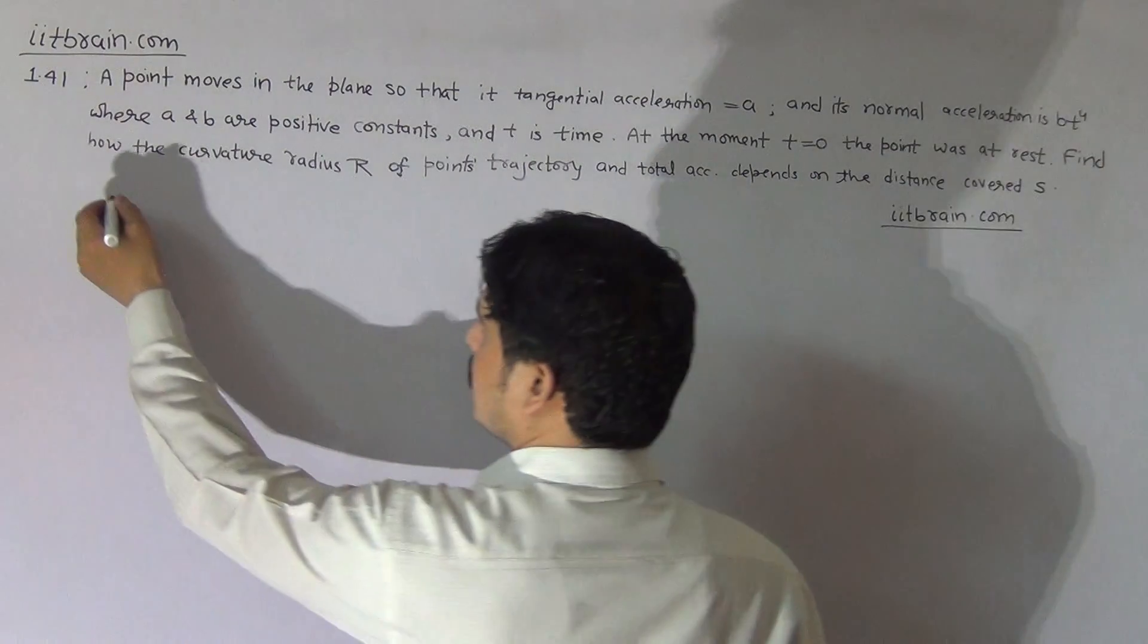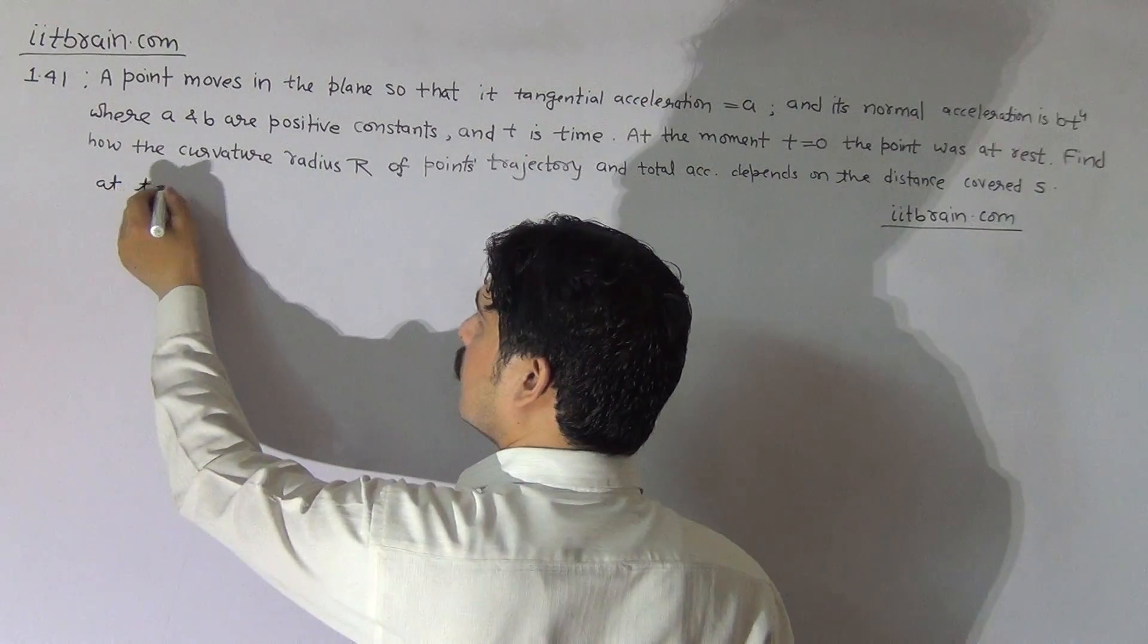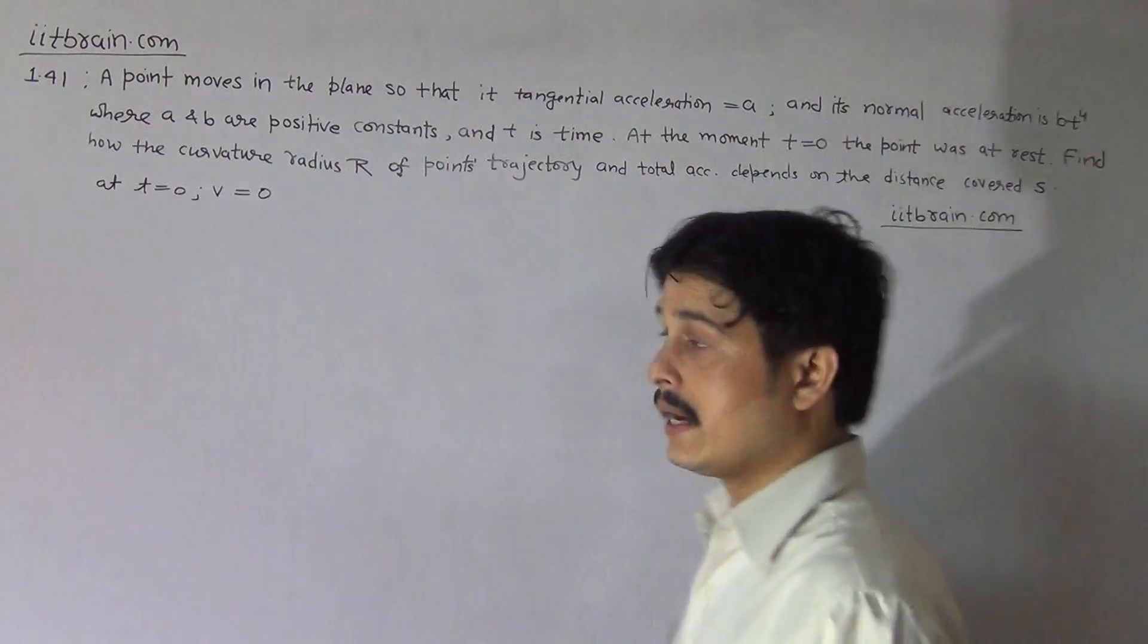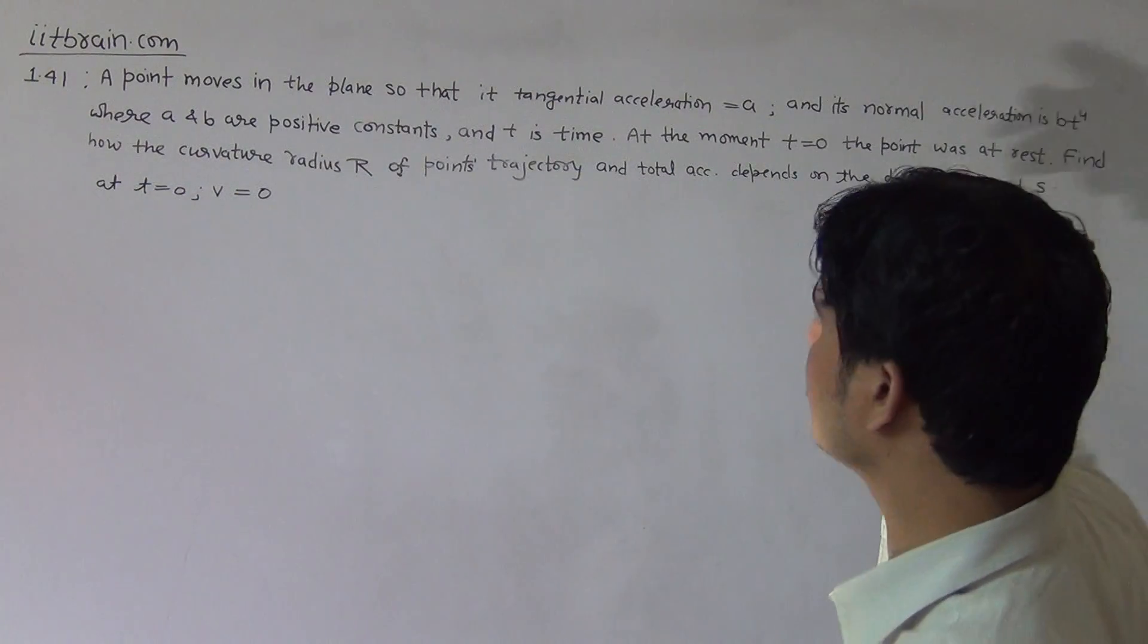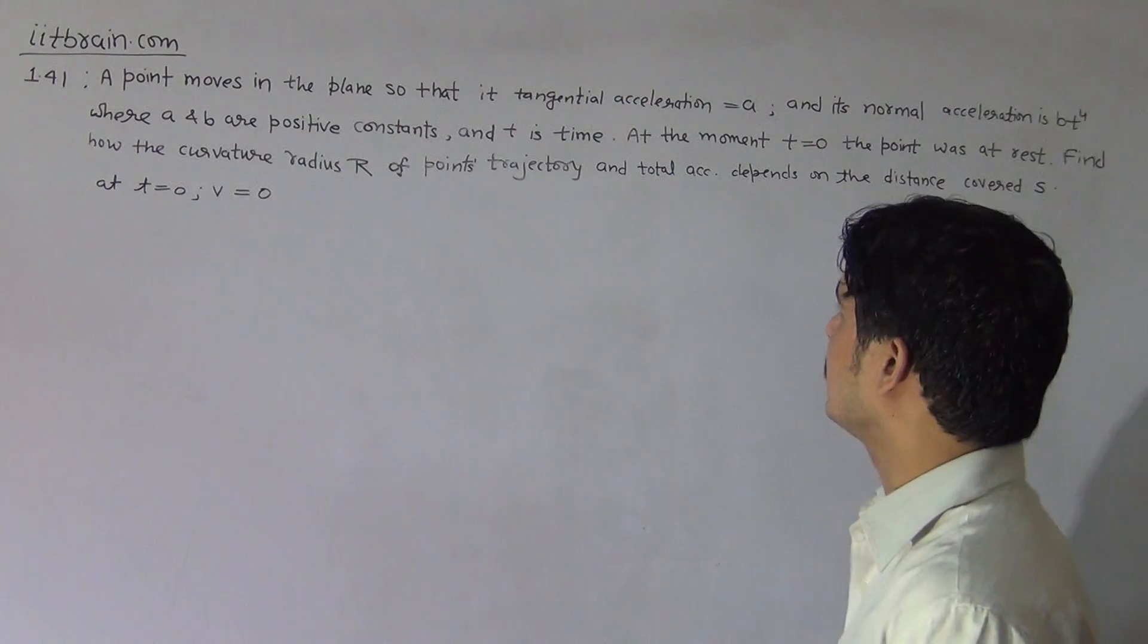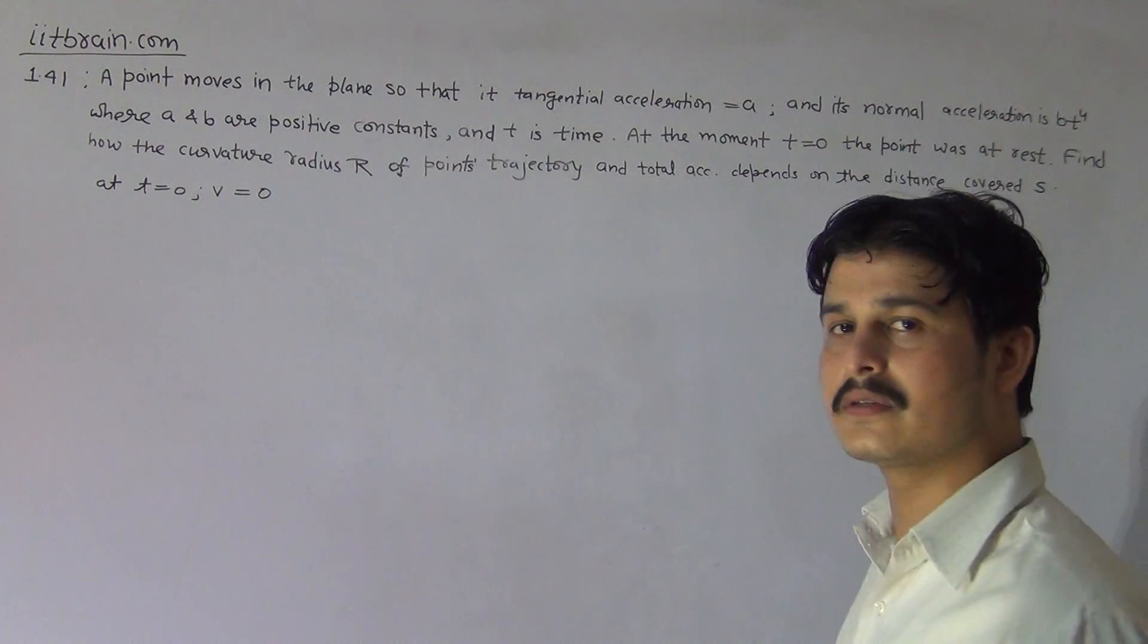It means at t equal to 0, v equal to 0. The point is at rest. Find how the curvature radius of points trajectory and total acceleration depends on distance S.